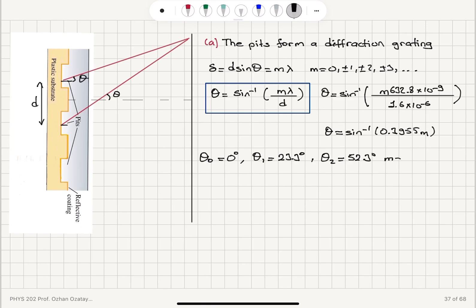And sin theta cannot be greater than 1. M equals 3, therefore, does not exist. So we have three angular positions where we would see constructive interference due to reflections from neighboring pits.